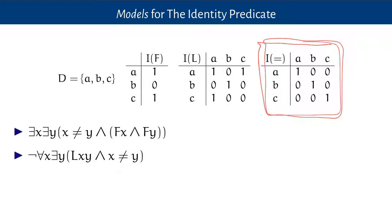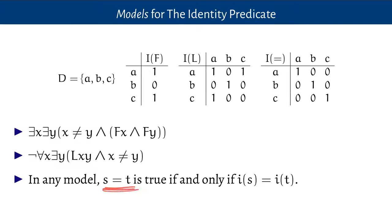A model gives us everything we need to interpret the identity predicate. The table for the identity predicate always looks the same: the object a is identical to a and not to any other objects. We get zeros off the diagonal and ones down the diagonal — a is identical to a and nothing else, b to b, c to c. The rule is: an identity sentence 's is identical to t' is true just when whatever the term s names is the same thing as what the term t names.